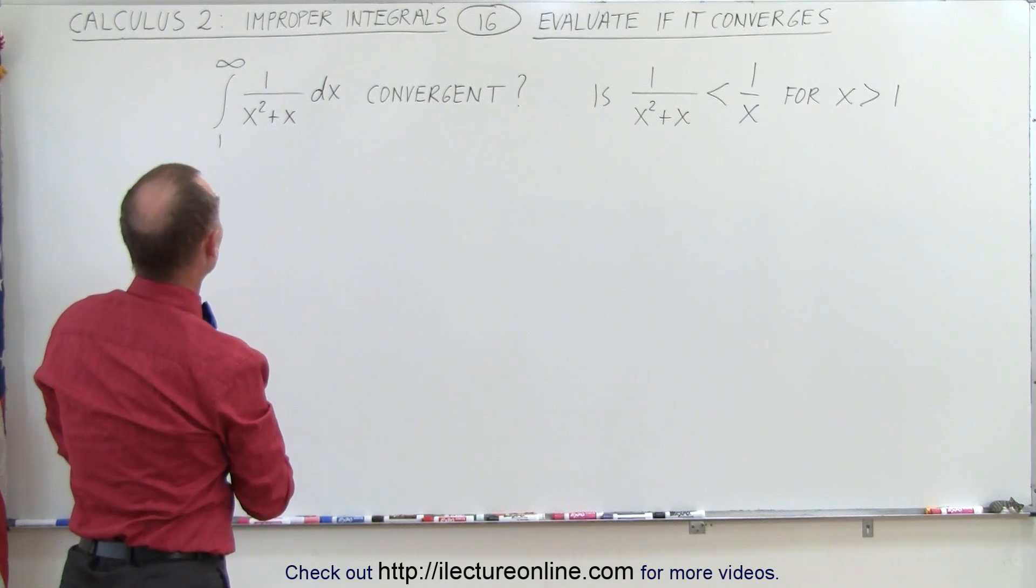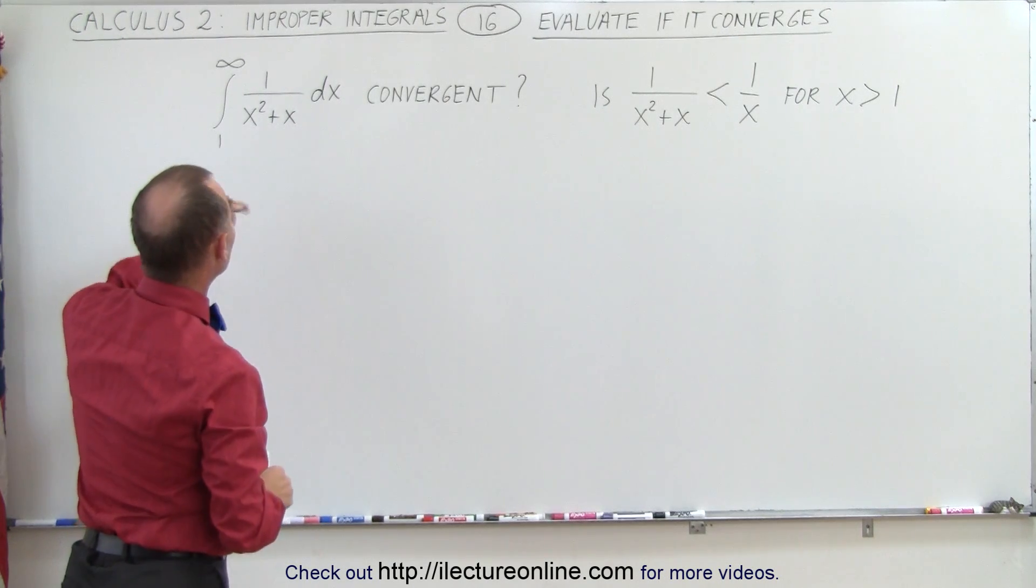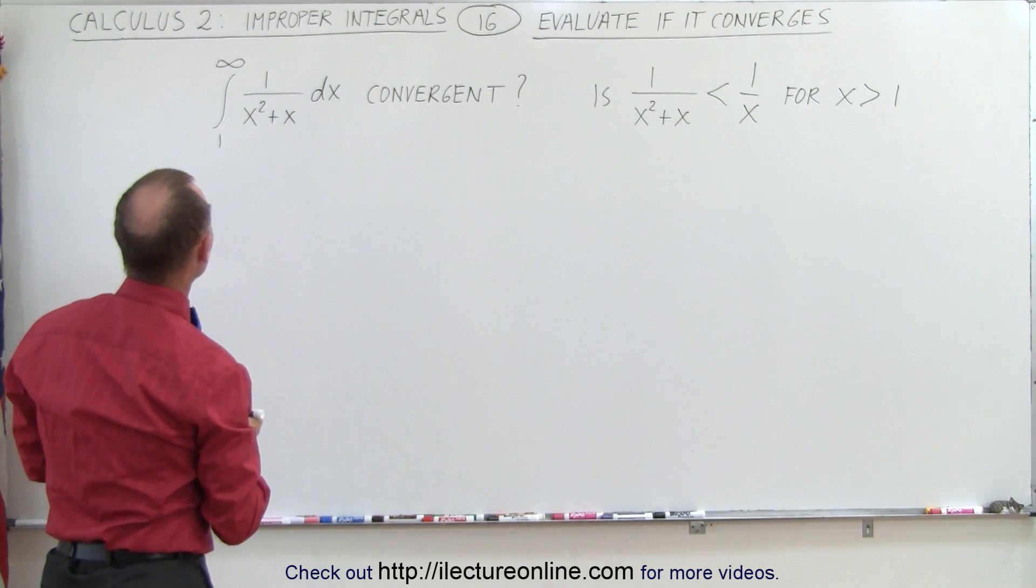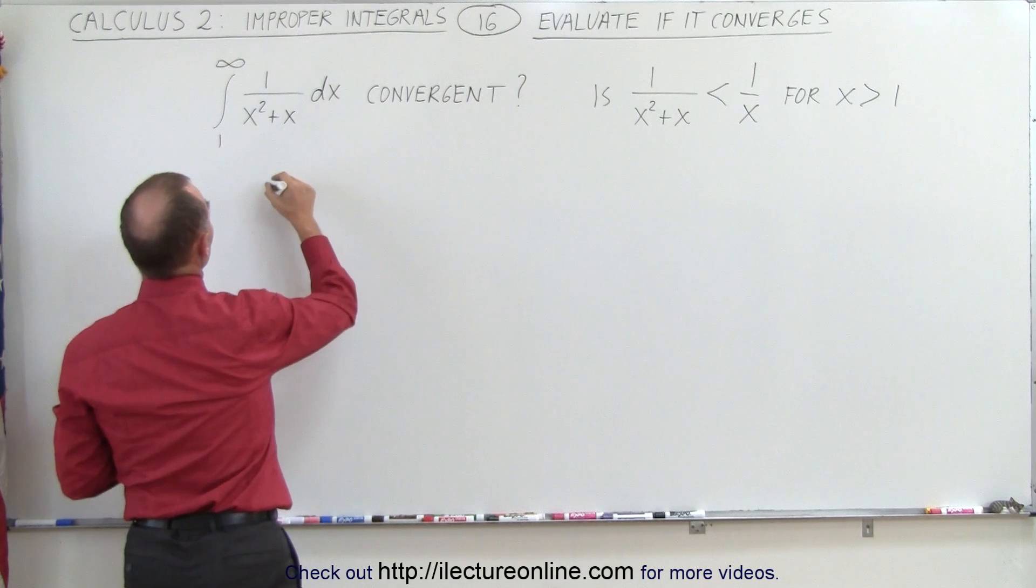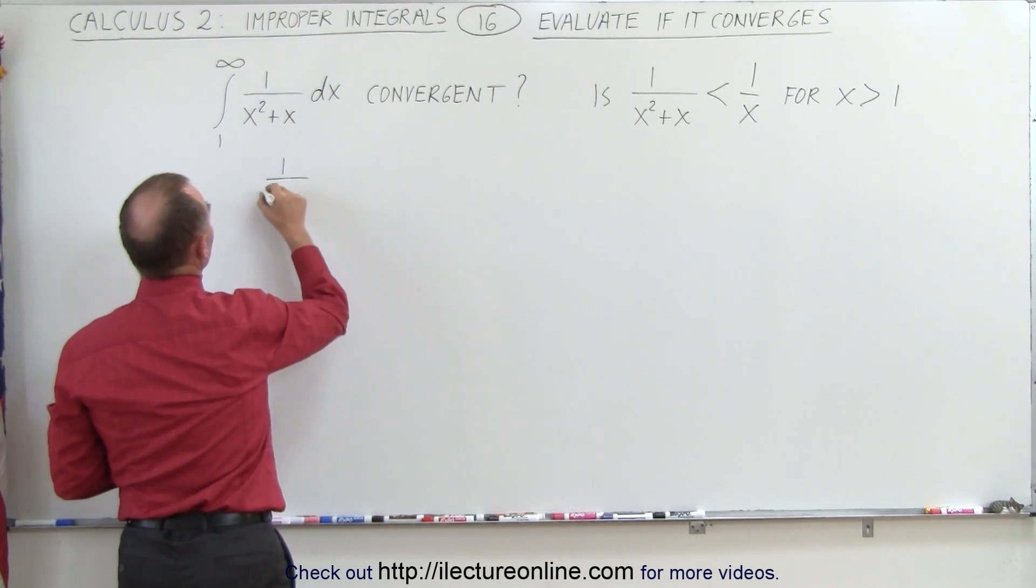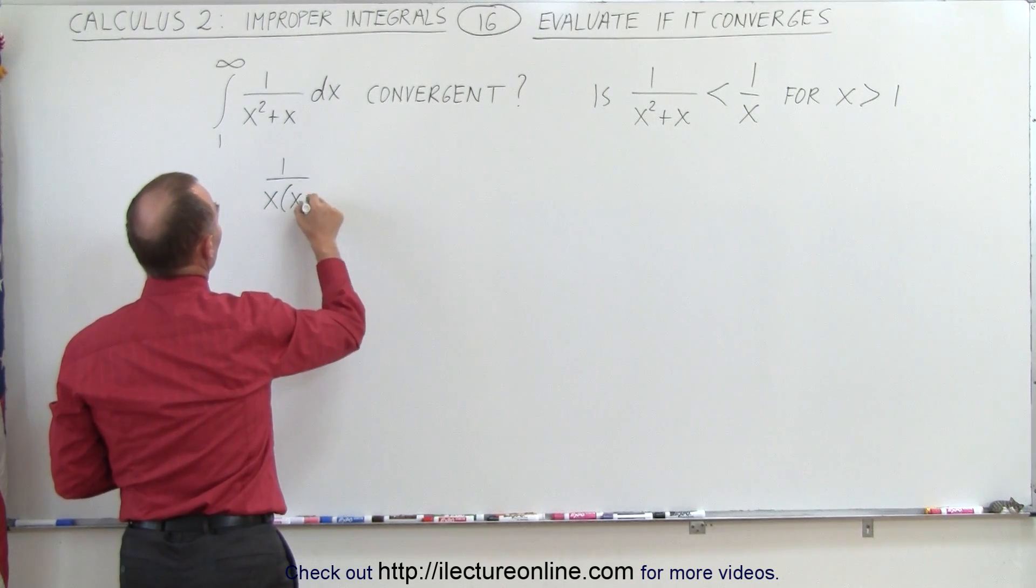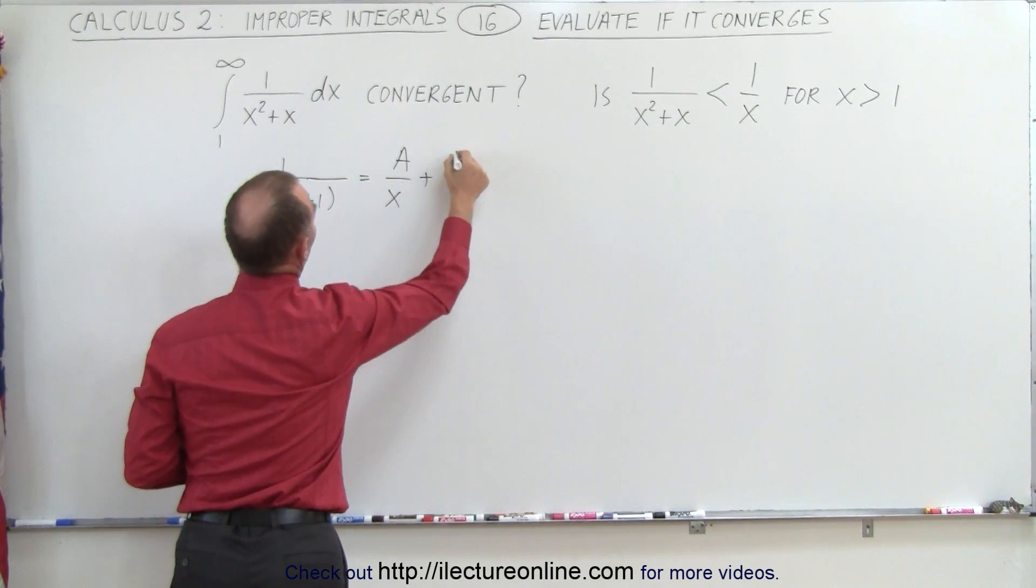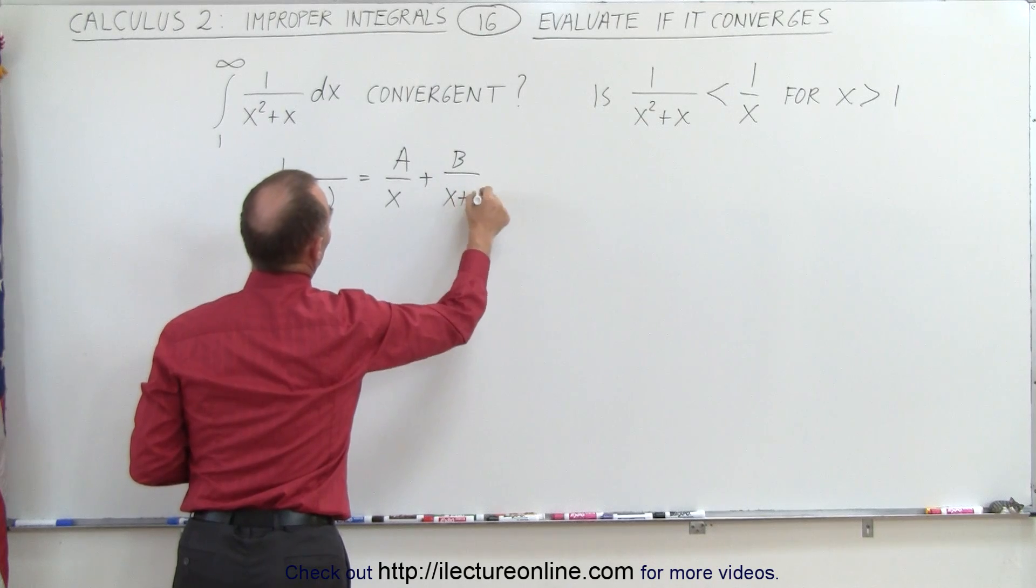Next, what we're going to do is use partial fractions. That would be a good way to try and integrate this. We can take 1 over x times x plus 1 and write it as A over x plus B over x plus 1.